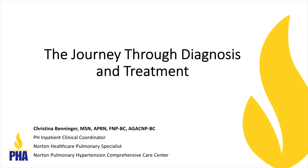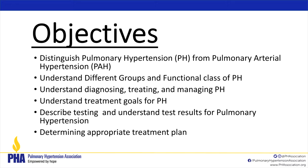We're going to talk about your journey through pulmonary hypertension — what you go through as a patient, some testing, what it means, and how it can help you. The objectives are: distinguishing between PH and PAH, the different groups and functional classes, diagnosing and managing PH, treatment goals, understanding test results, and discussing an appropriate treatment plan for you.